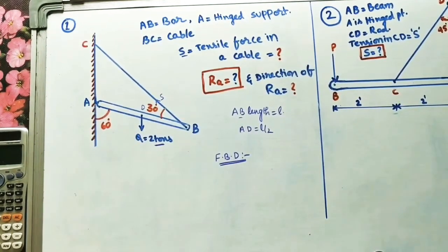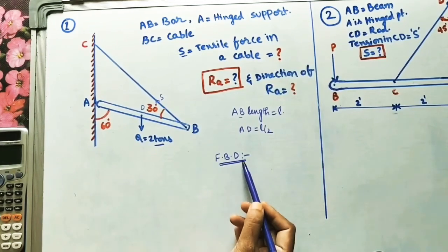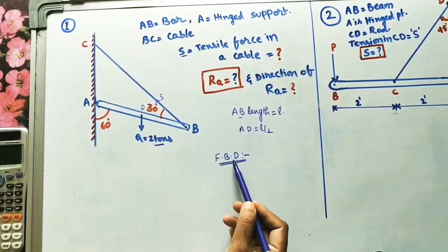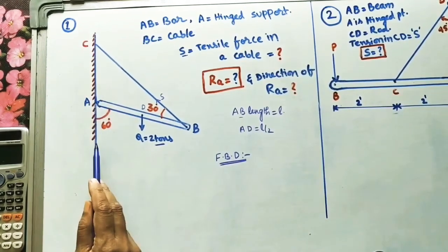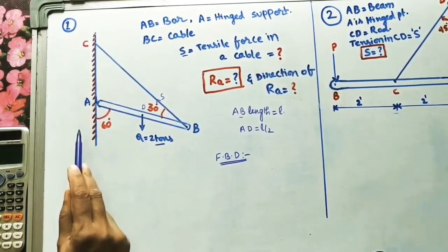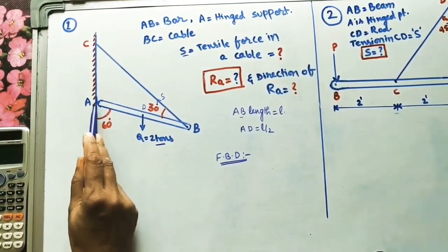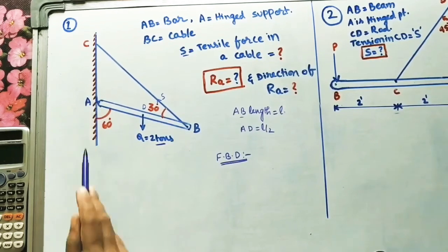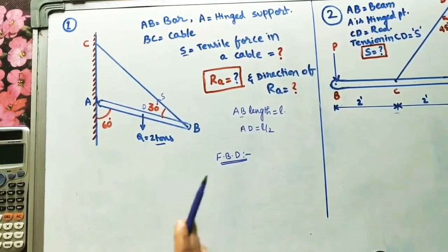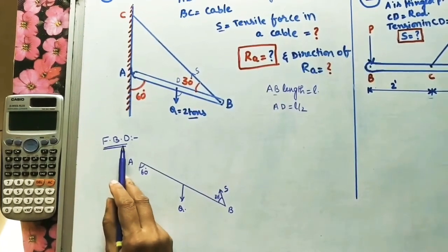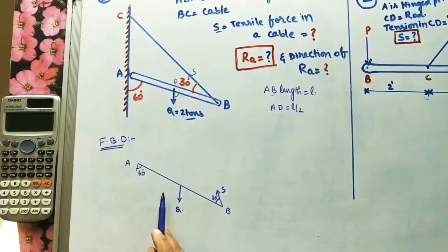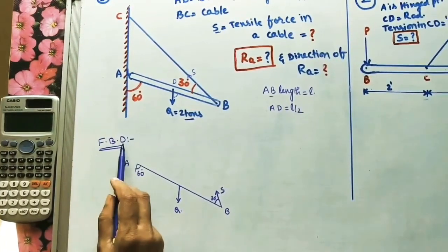For solving these two unknowns, S and RA, we need to draw the free body diagram. In the free body diagram, we remove all the supports and take the reactions due to those supports.